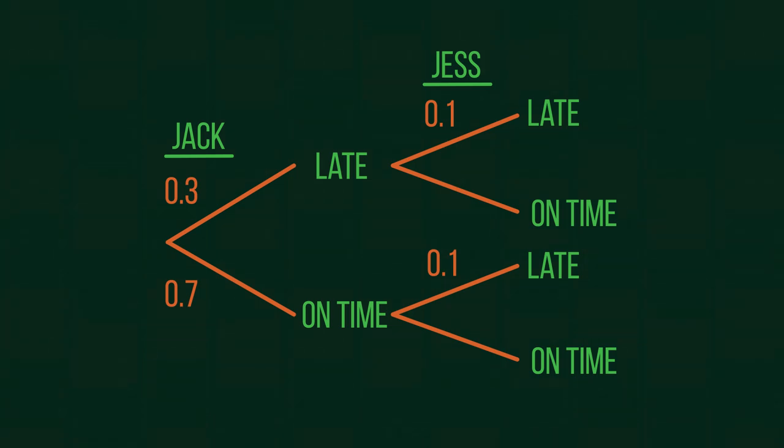Pause and work out Jess's likelihood of being on time. As our probabilities must total one, we subtract 0.1, her lateness probability, giving us a value of 0.9 for being on time. Putting these values onto our tree diagram should look like this.